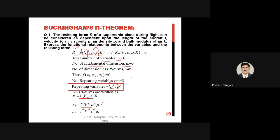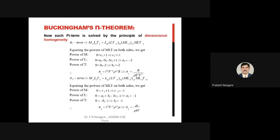Each Pi term is solved using the principle of dimensional homogeneity. By this law, the left-hand side dimensions must equal the right-hand side dimensions. Since Pi terms are dimensionless, their dimension is M⁰L⁰T⁰. By equating the powers of M, L, and T on both sides, you obtain equations to find a1, b1, and c1.